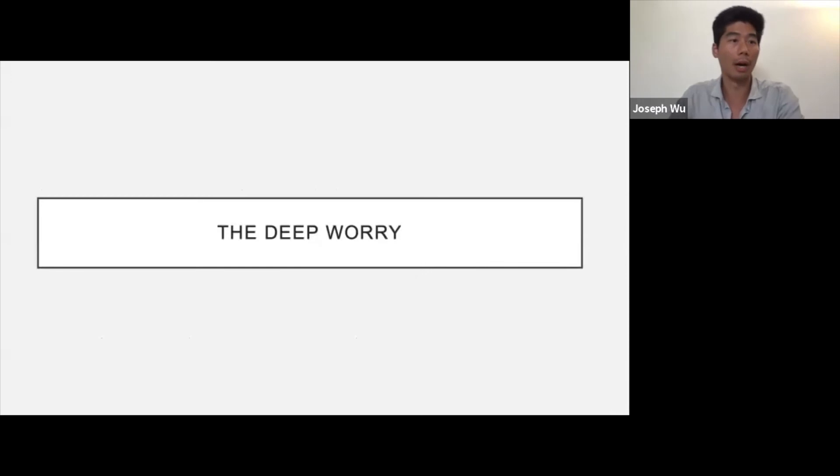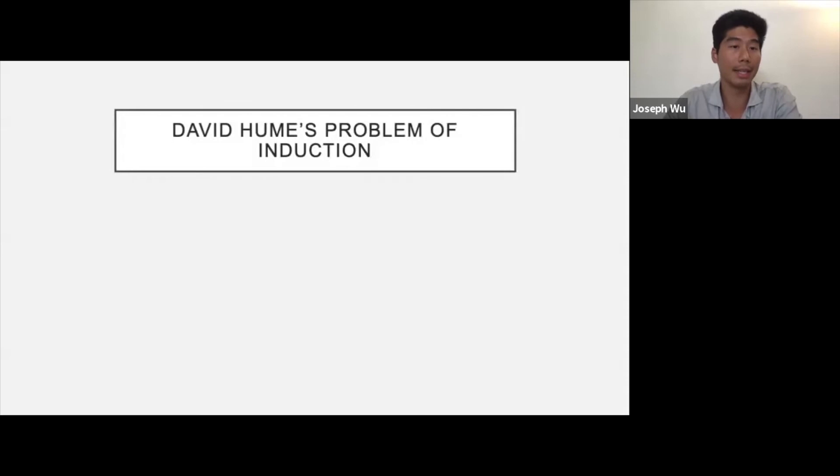I want to talk very briefly about a deep worry lurking in the background here. And this is David Hume's problem of induction. You might be wondering what all the fuss is about with induction. Of course, it's true that we use induction all the time, but sometimes it's fallible. But you might be wondering, so what?